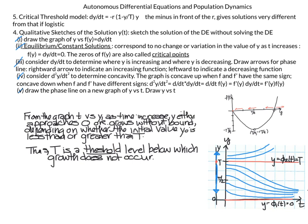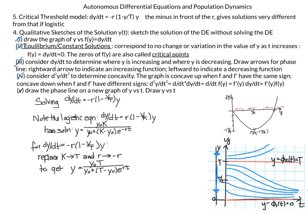Now that we've done this qualitative sketch — done without even solving the differential equation — we can also solve it explicitly. The equation is separable. However, I can also notice that the logistic equation has a known solution, so if I replace k with T and replace r with negative r, I can borrow that solution and get my solution for the critical threshold model. From our solution, we can confirm what our graph shows.